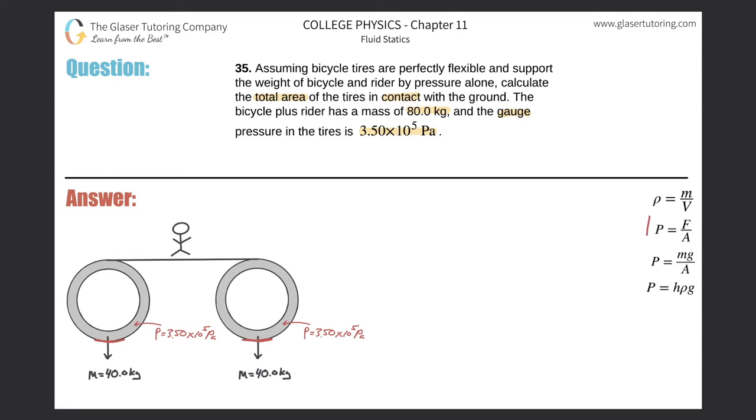So if we're thinking about finding the area, we're given pressure and masses. We're probably going to be using this formula over here on the right hand side. Pressure will be equal to the force divided by the area over which that force is applied. We realize that each tire has a certain pressure value, about 3.5 times 10 to the 5 pascals.